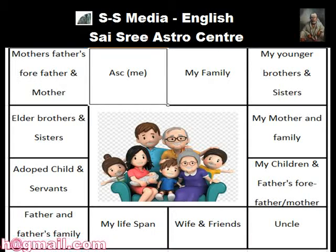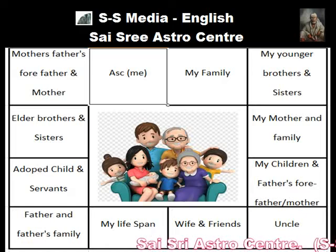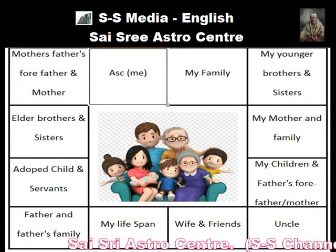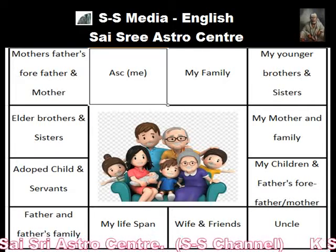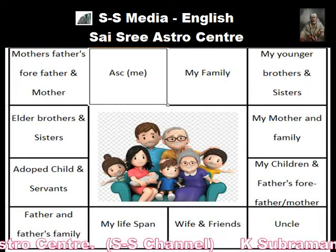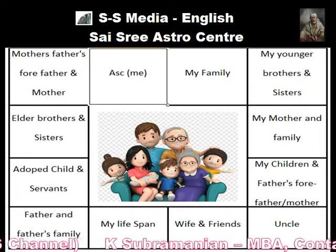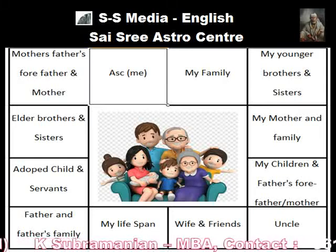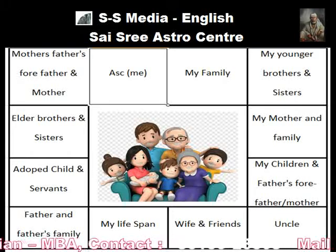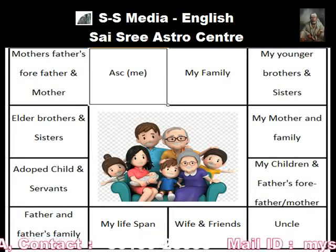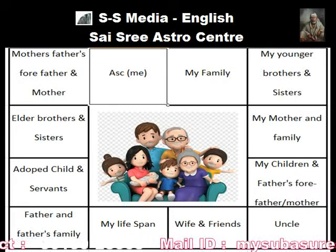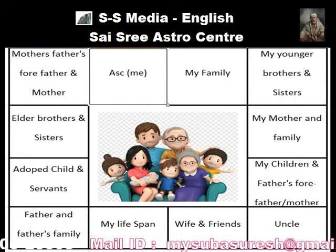The seventh house indicates partners — that is the wife or husband. If the chart holder is male, then his wife will be indicated by the seventh house. If the chart holder is female, then her husband will be the seventh house. It also indicates the friends that are going to get associated.